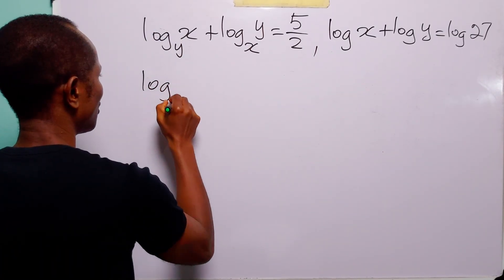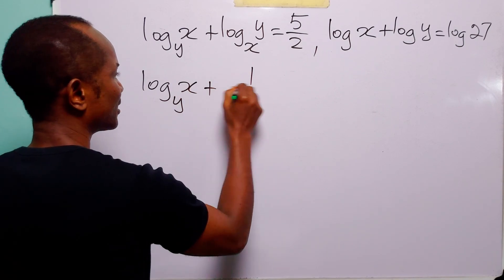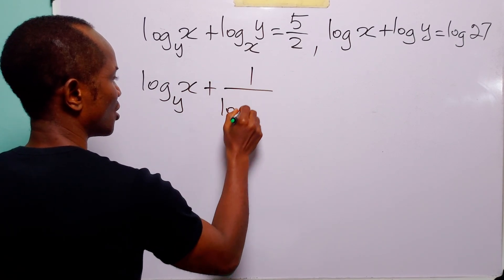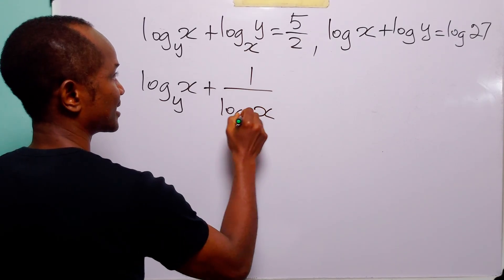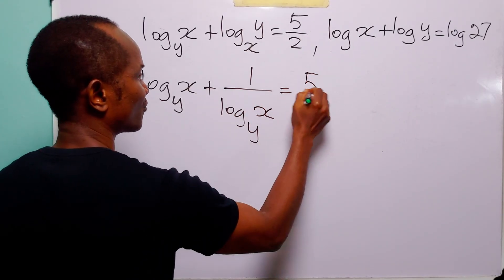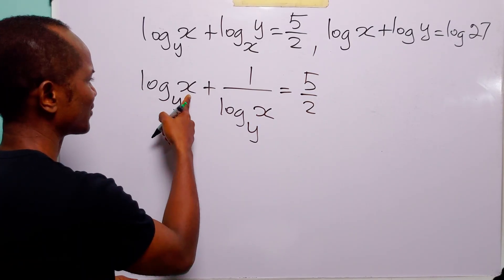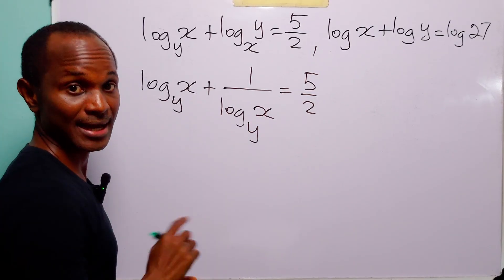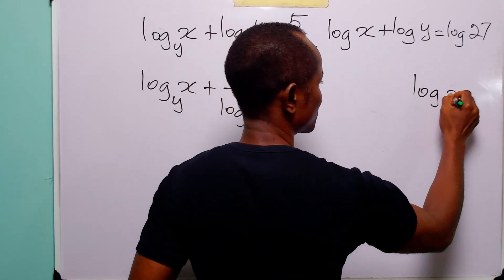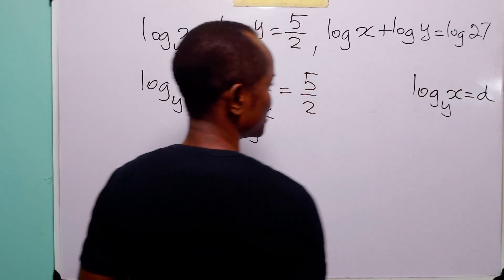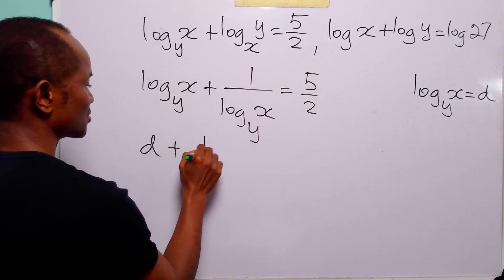you are going to have that log to base y of x plus 1 over log to base y of x is equal to 5 over 2. Now we have log to base y of x appearing twice, so let log to base y of x be equal to d. With this substitution this equation becomes d plus 1 over d is equal to 5 over 2.